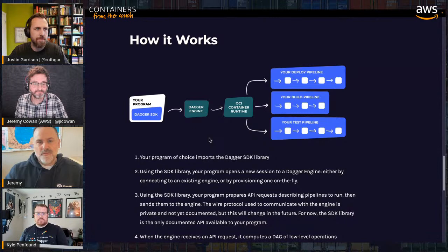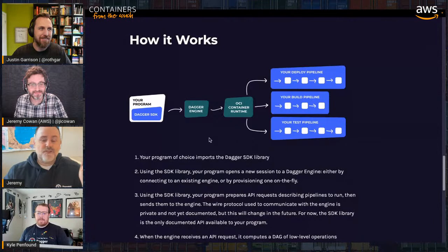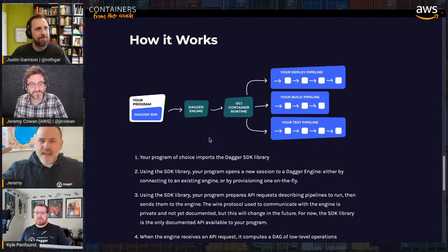How is this different from a Jenkins server with plugins that pull in Git repos? The key difference is we're not taking over your CI runner. If you're on Jenkins, AWS CodeBuild and CodePipeline, GitHub Actions, CircleCI, GitLab — whatever — you just use Dagger inside that CI environment.